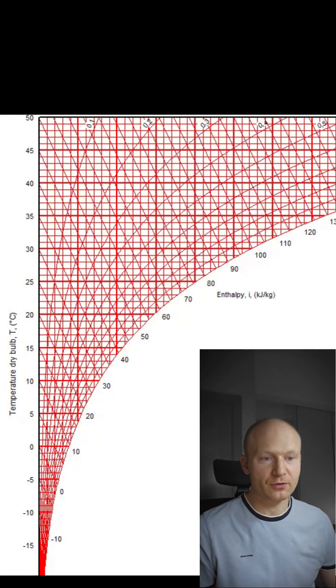First, you need the state of air entering and exiting your heater. You'll need dry bulb temperature, relative humidity or specific enthalpy. Plot those on the Mollier diagram.